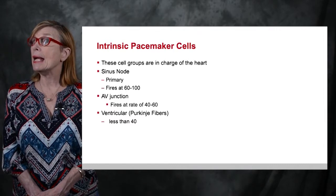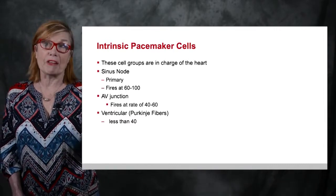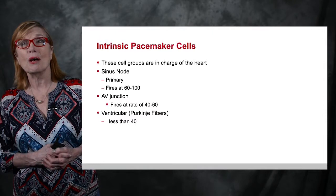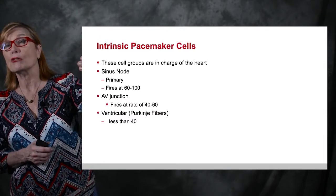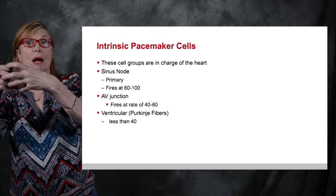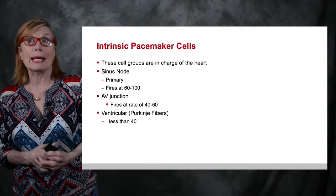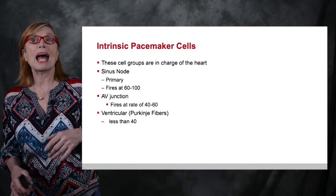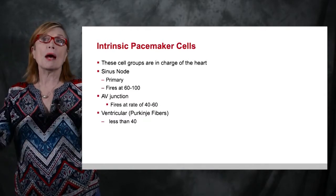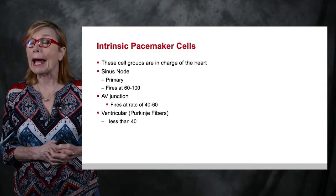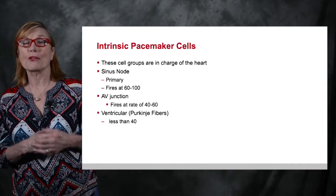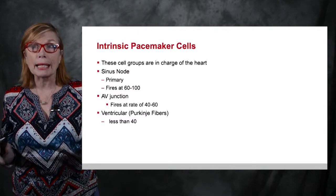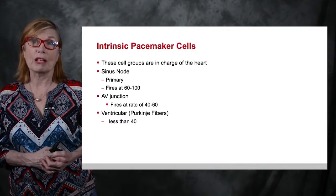When we see an AV junctional rhythm at a rate of 40 to 50, our goal is not to suppress it but to stimulate the sinus node, because the sinus node should be in charge. When the sinus node is in charge, the atria contract and increase ventricular filling. When the AV junction is in charge, atria and ventricles contract simultaneously, causing significant loss of ventricular filling. If the Purkinje fibers are in charge, depolarization starts at the bottom and goes upward — completely anomalous — and profoundly affects ventricular filling.